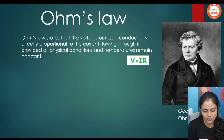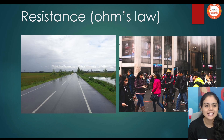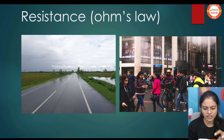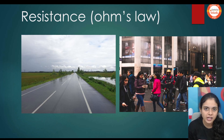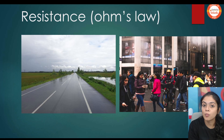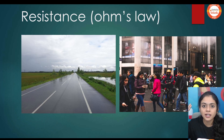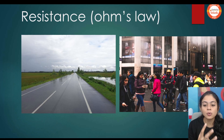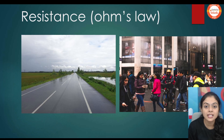That is given by the formula V is equal to IR. R is nothing but resistance. What is resistance? Resistance is the opposition offered to the flow of electrons. If the length of the conductor is more, electrons feel more resistance. And if the area is more, electrons can move freely, so resistance is less. Resistance is directly proportional to length and inversely proportional to area.